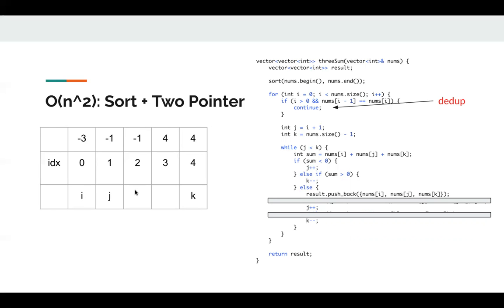Now i is zero, j is two, k is three. Then we push back another duplicate triplet, which is negative three, negative one, four. So we have duplicate triplet. So here, we need to apply the same mechanism that we apply to i. We need to skip those duplicate elements.